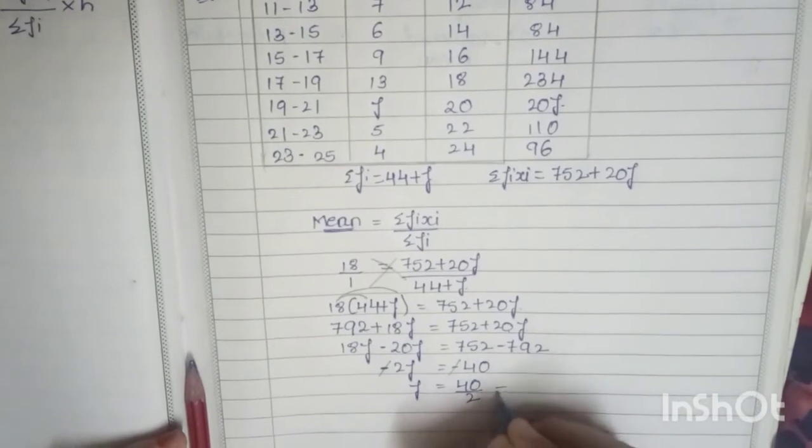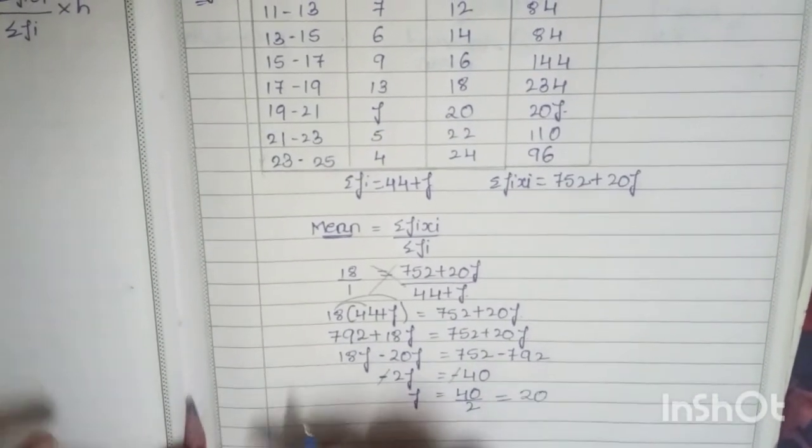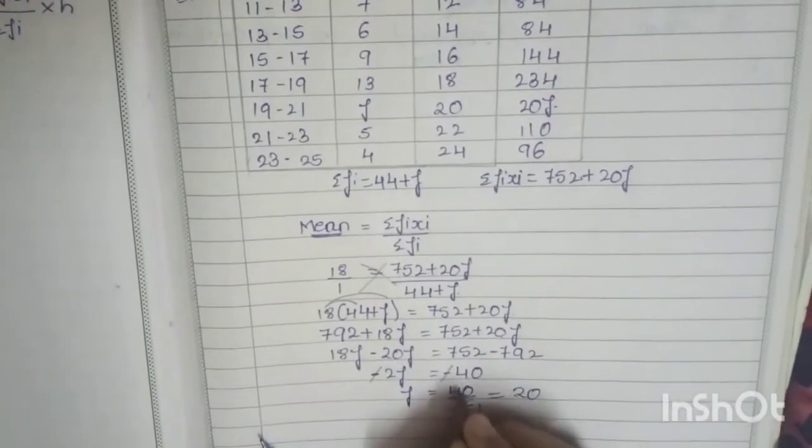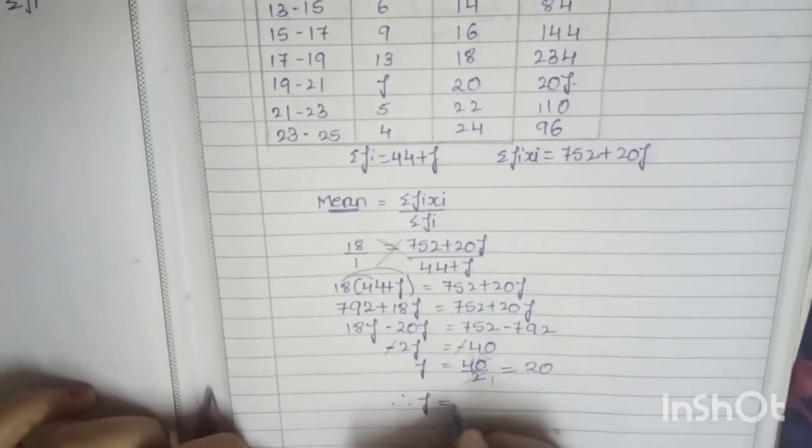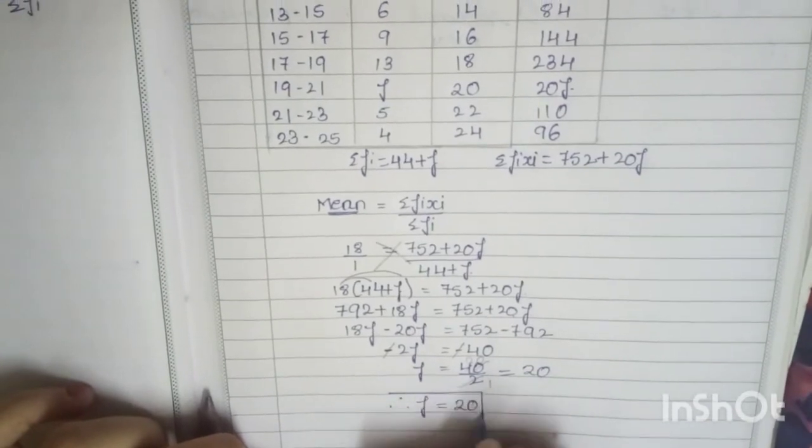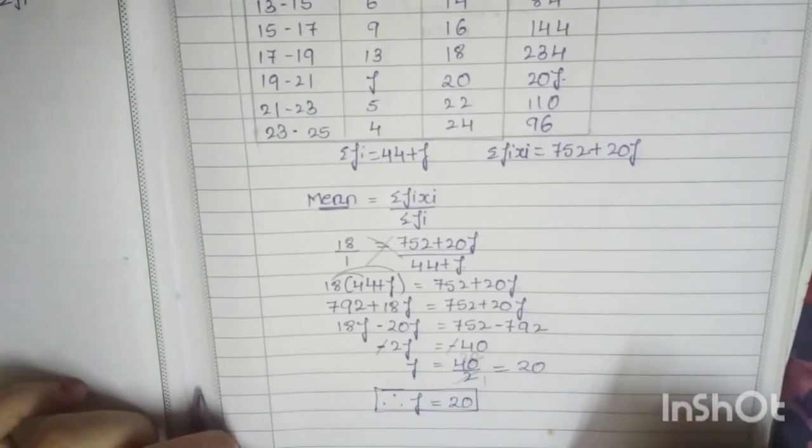Now f equals 40 by 2. The 2, when it comes to the right hand side, it becomes by 2. On cancellation it will be 20 - two ones are two, twos are two, zeros are zero. Therefore, finally the value of f will be equal to 20.